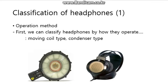There are many kinds of headphones. How can we classify them? First, we can classify headphones by how they operate. There are the moving coil type and the condenser type.